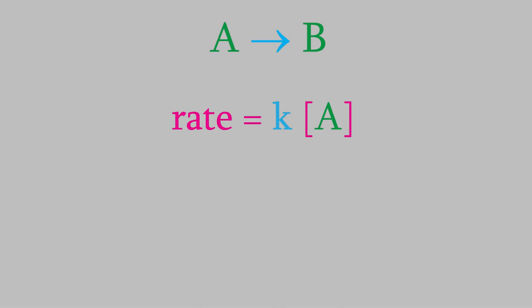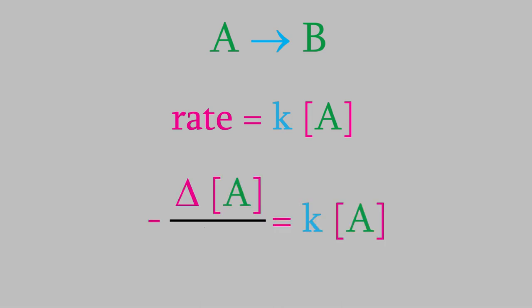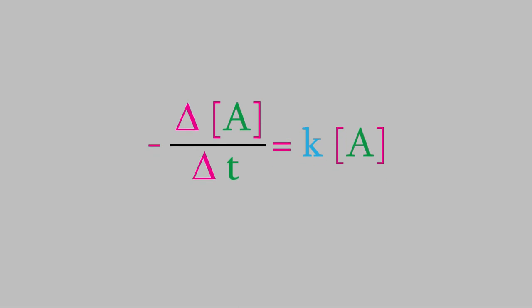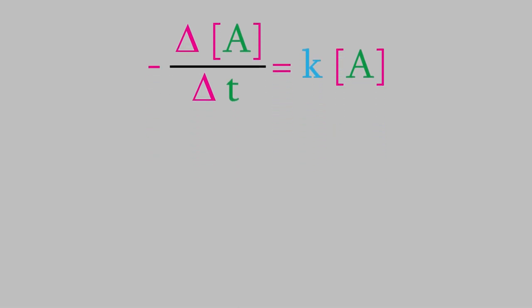We'll start with the rate law for a first-order reaction. Since there's only one reactant, the rate law must be: rate equals K times the concentration of A. Let's put in the definition for the rate: it's the change in the concentration of A over the change in time. Also, remember that because A is a reactant, its concentration is decreasing, so delta A is a negative number — that means we need a negative sign in front of the rate. Now is where the calculus comes in. The symbol delta means concentration and time are changing by finite measurable amounts. We can shrink those changes so they're infinitely tiny, and instead of delta, we take a derivative, using dA and dt.